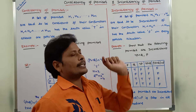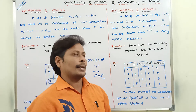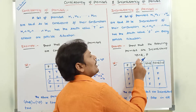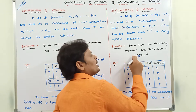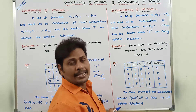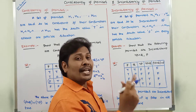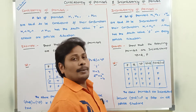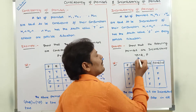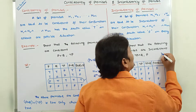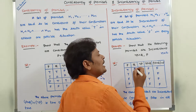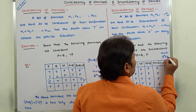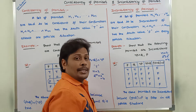Now we go for the second topic: inconsistency of premises. I am taking two premises: ¬P∧Q and P. These premises are said to be inconsistent if their conjunction contains the truth value false in all possible situations. There are only two statement variables, so n = 2, giving 2 power 2 = 4 possible situations: true-true, true-false, false-true, false-false.